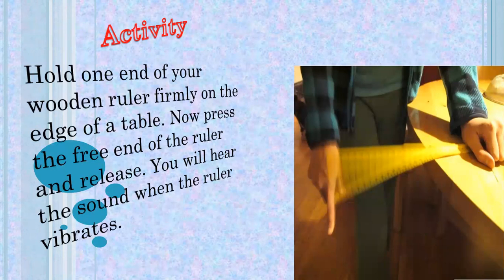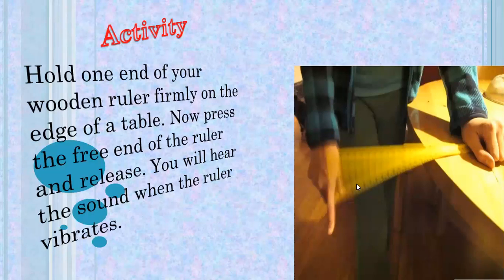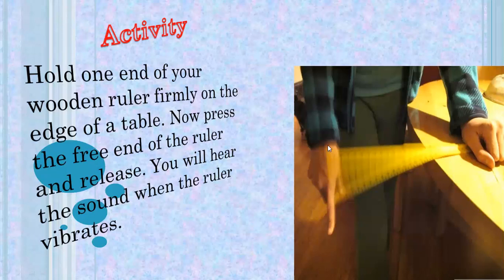Now we will do an activity. Hold one end of a ruler firmly on the edge of a table. When you press the free end of the ruler and release it, you will hear a sound and you can see vibration. By leaving the free end, it will move up and down, and you can see the vibrations formed by the ruler moving up and down. This is a very good example to observe the vibrations of sound.